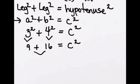And then nine plus sixteen is twenty-five, and twenty-five equals C squared. And don't stop there. C is not by itself. It has that little square next to it. And to undo squaring, we need to square root.